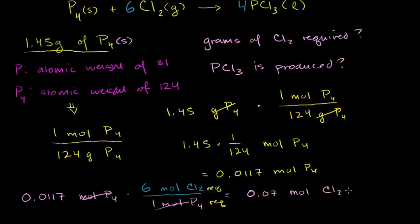We're essentially multiplying by 6: 6 times 0.0117 equals 0.07 moles of chlorine gas required.